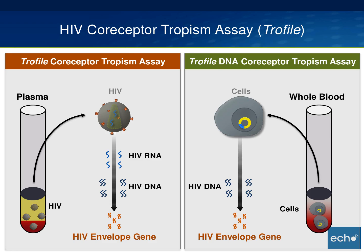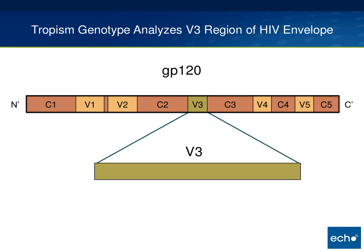One point of confusion: the standard Trofile co-receptor tropism assay takes a plasma sample and amplifies the virus from there. The Trofile DNA test, by contrast, is used when a patient has an undetectable viral load or viral load less than 1,000. Rather than isolating circulating virus from plasma, it takes cells, lyses them, and amplifies the proviral DNA — the virus integrated into the cells — to obtain the envelope gene, then proceeds with the standard tropism assay.